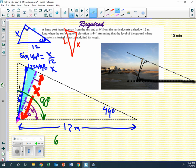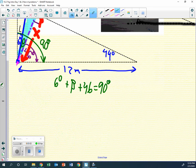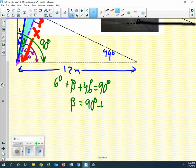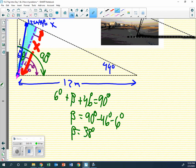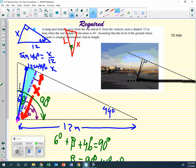So 6 degrees plus, let's call this, let's call it beta. 6 plus beta plus 46 has to equal 90. So could you figure out what beta is? Sure. It's going to be 90 minus 46 minus 6, which is 38 degrees. So now I know that this little angle here is 38 degrees.